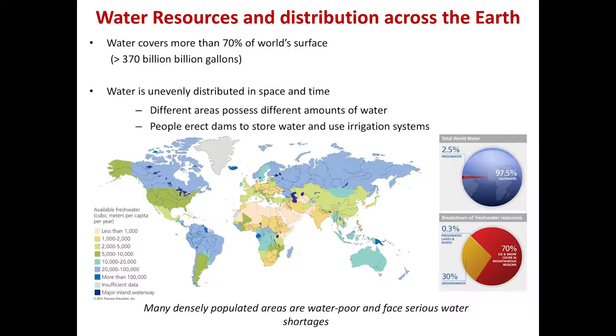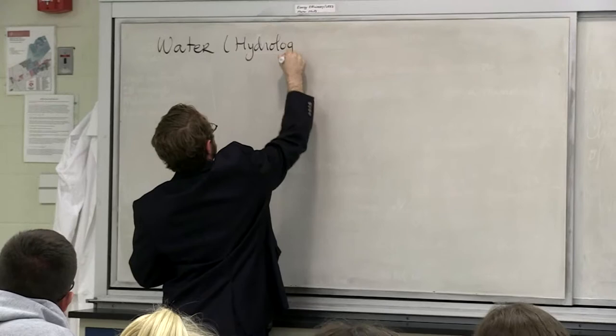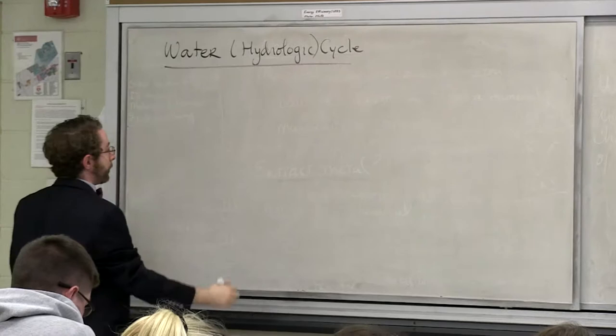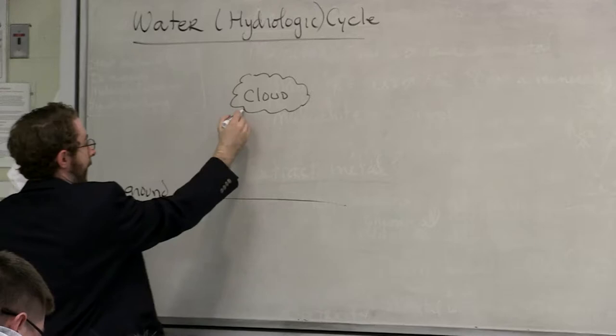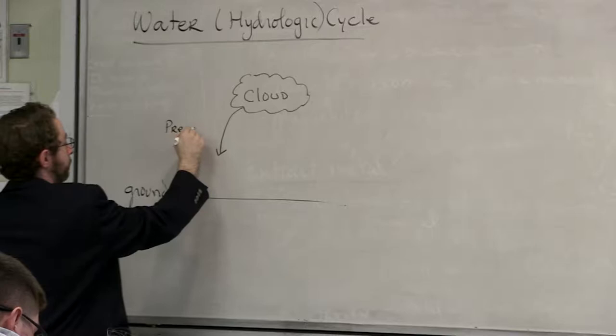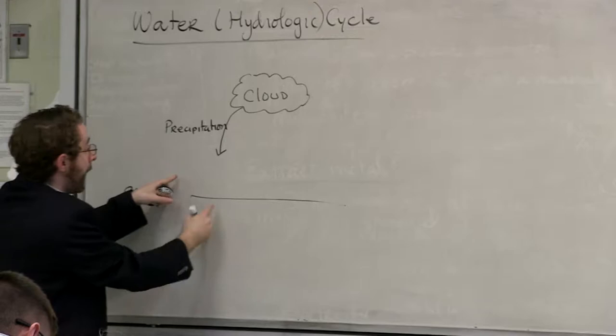The first thing we're going to be considering in today's lab is the hydrologic cycle. The way the cycle works is here we have our cloud and here we have the ground. Water in the form of precipitation is going to come from the atmosphere down to the ground, and when it hits the ground, one of two things can occur.